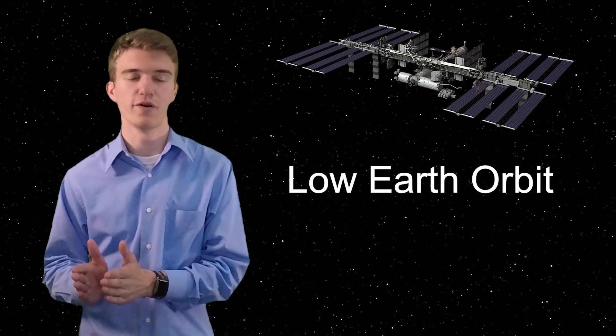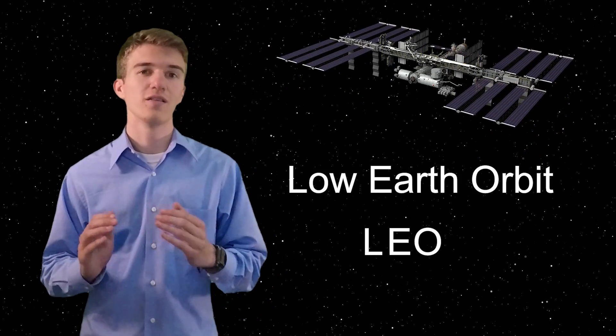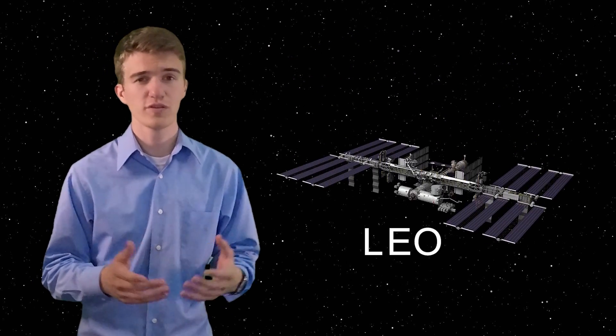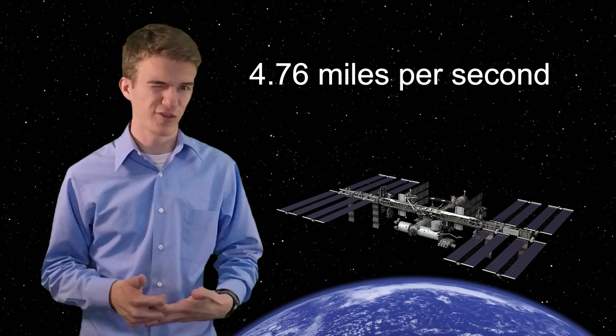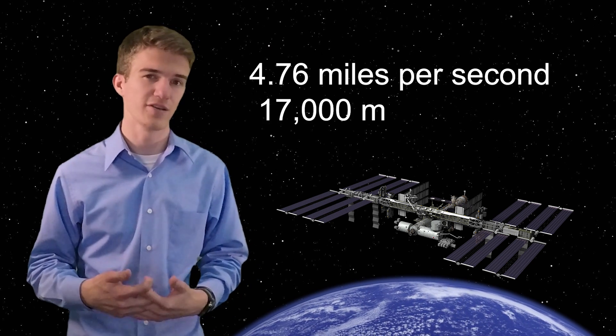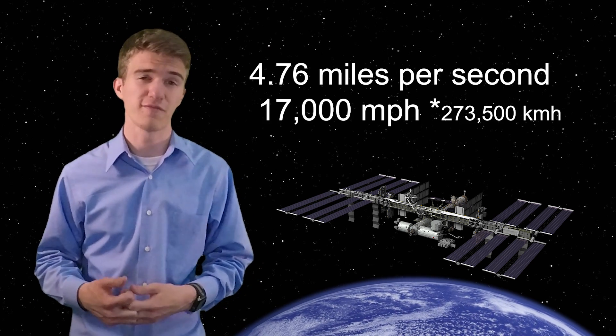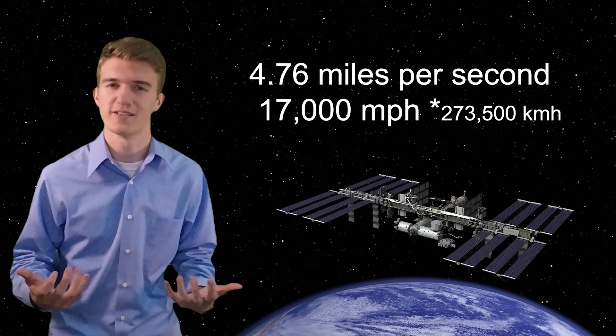Now first let's talk about the International Space Station. The International Space Station is in what's called a low Earth orbit, also known as LEO. LEO, as the name says, is pretty low, close to Earth, and it's orbiting Earth. Now it's traveling at about 4.76 miles per second, which is also 17,000 miles per hour, which is incredibly fast. Now you might be asking why is that so fast?